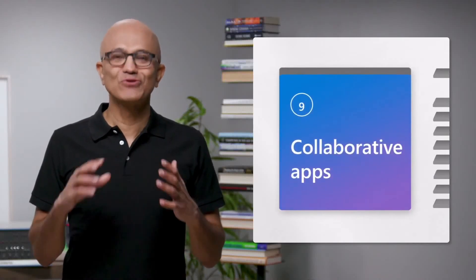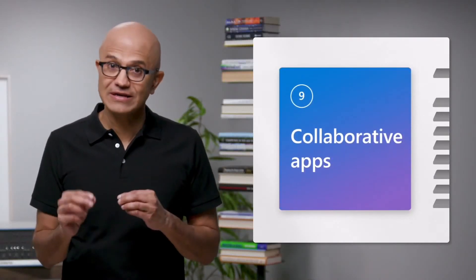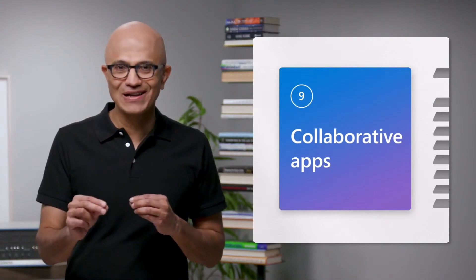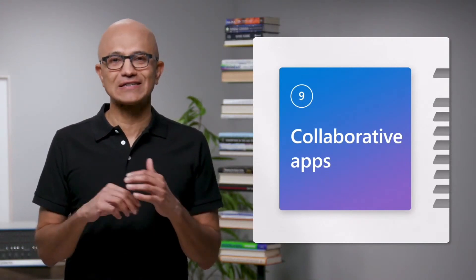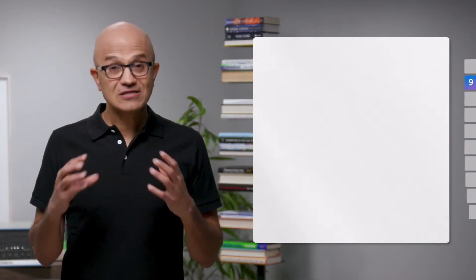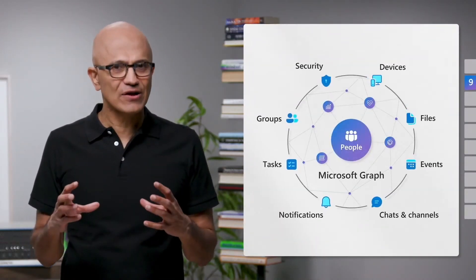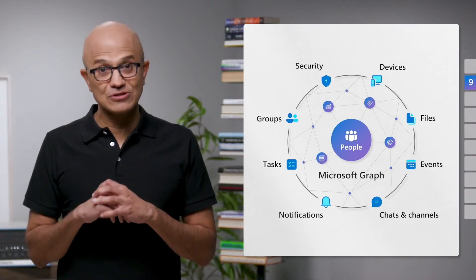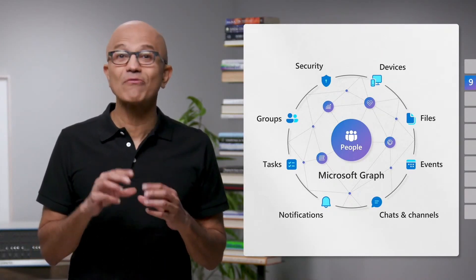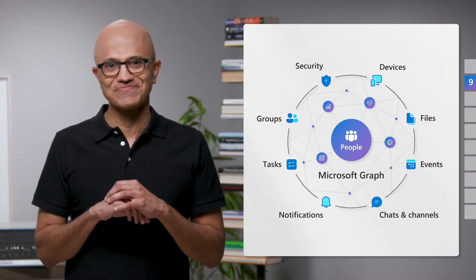Let's talk about the future of work and how we're making apps more contextual and people-centric, so you can build a new class of collaborative applications. It starts with Microsoft Graph, which underlies Microsoft 365 and makes available to you information about people, their relationships, and all of their artifacts.